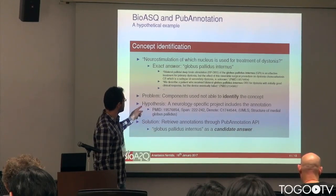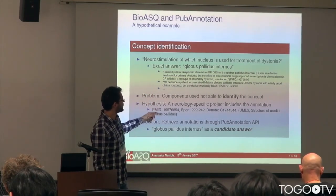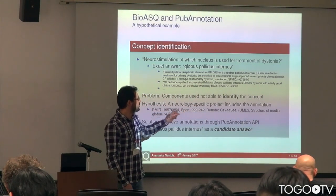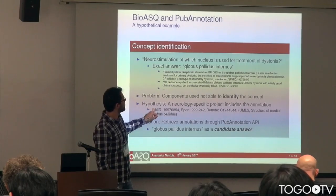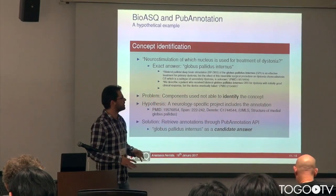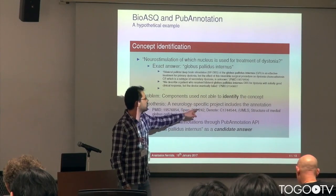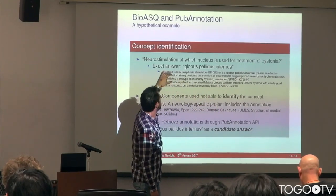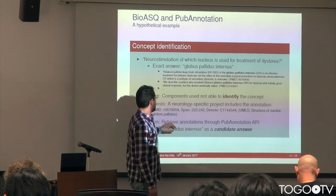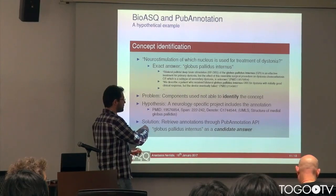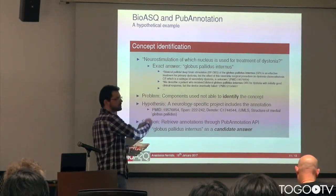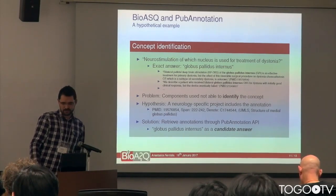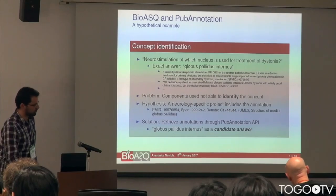So the hypothesis — the aim of this plan — is to try to use repositories specifically present in PubAnnotation. If such a project were available where this entity was annotated in this snippet of this PubMed article, we could retrieve the annotation, and the system could have it as a candidate answer, and depending on the rest of the algorithm, it could be returned as correct.